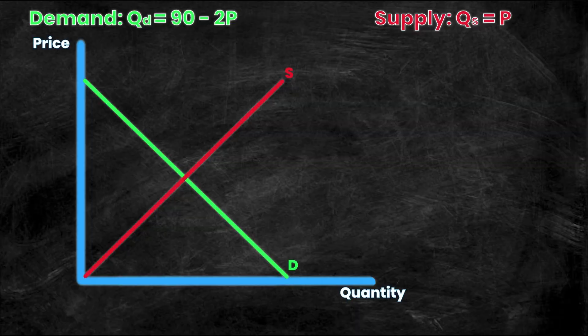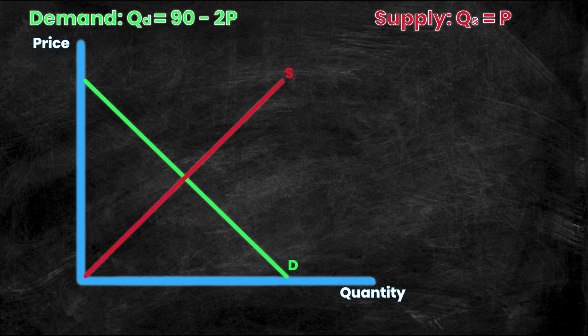In this example we have a very generic supply and demand curve — just the demand curve and the supply curve drawn out on a price and quantity axis. I recommend you do this at the beginning of every single problem, even before you have any values figured out — just draw the rough sketch. Now you'll notice we have a demand and a supply equation: quantity demanded equals 90 minus 2p, and quantity supplied equals p.